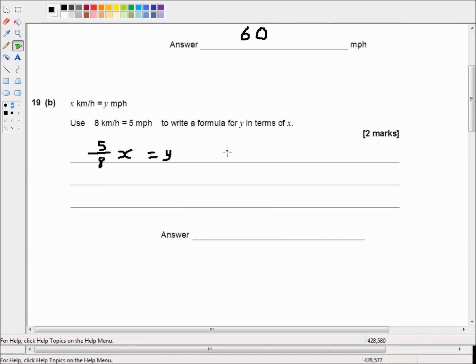So all we have to do is rearrange. Well actually we don't even rearrange it. We just make y the subject. So it's just y is equal to 5x over 8. It's just that simple. It's 5 times x divided by 8. And that's your two marks.